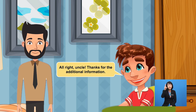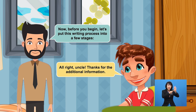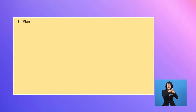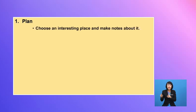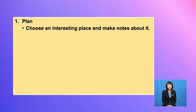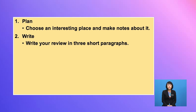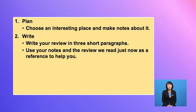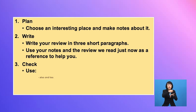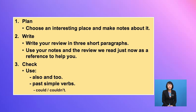All right Uncle, thanks for the additional information. Now, before you begin, let's put this writing process into a few stages. First, you need to have a plan — choose an interesting place and make notes about it. Then write your review in three short paragraphs, using your notes and the review we read as a reference. And lastly, check your writing: use 'also' and 'too', past simple words, and 'could' and 'couldn't'.